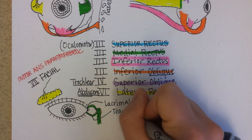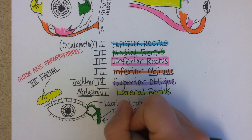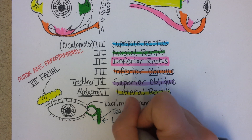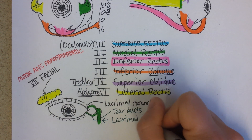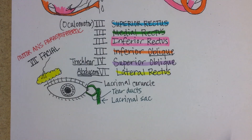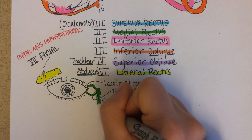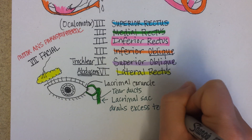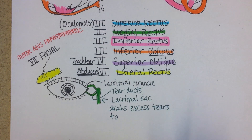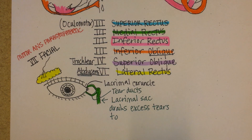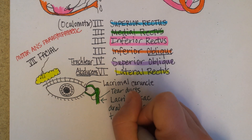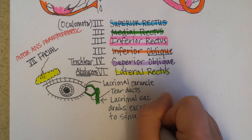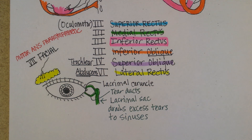We've got two tear ducts, and then the lacrimal sac drains the excess tears — to where do you think? What happens when you get choked up during a movie? You start sniffling. So it drains excess tears to the sinuses, and then the fluid starts to run out your nose.